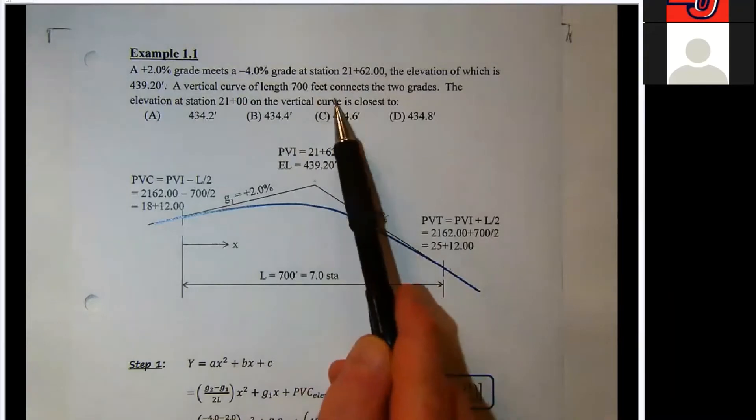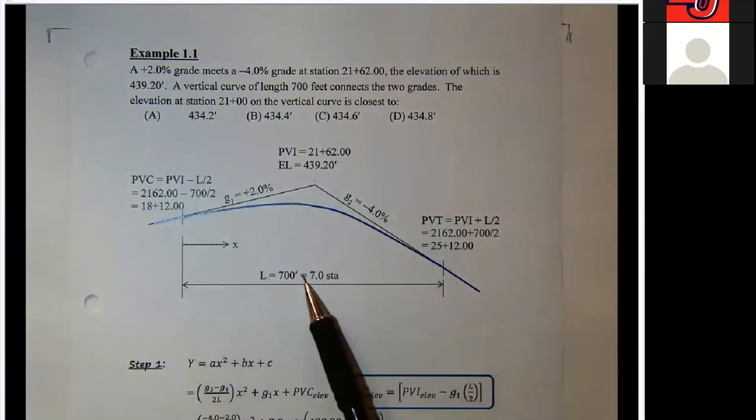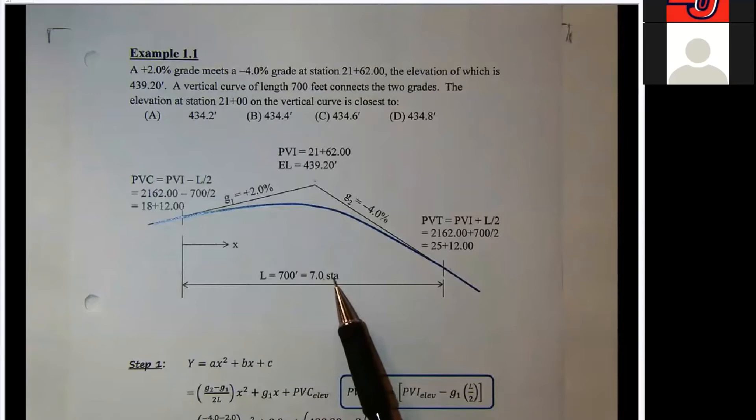We've got a vertical curve length of 700 feet connecting the two grades, so we know that L is 700 feet. I divide by 100 because I'm going to put it into stations already, so that's seven stations.